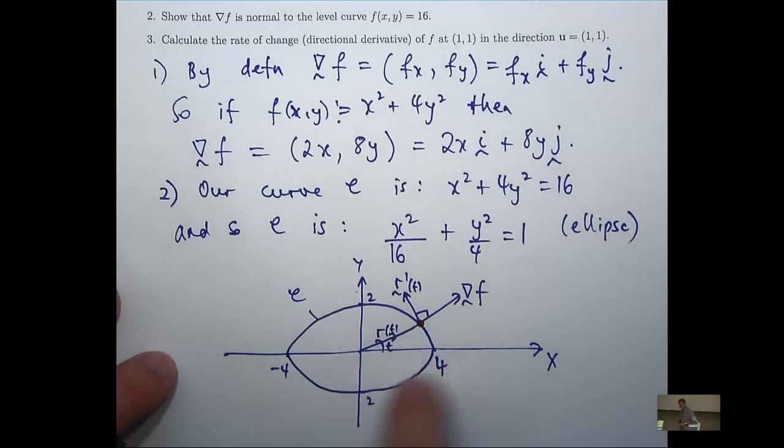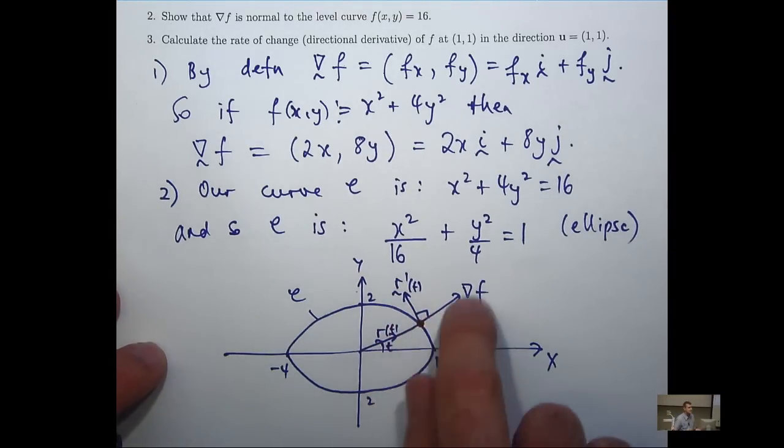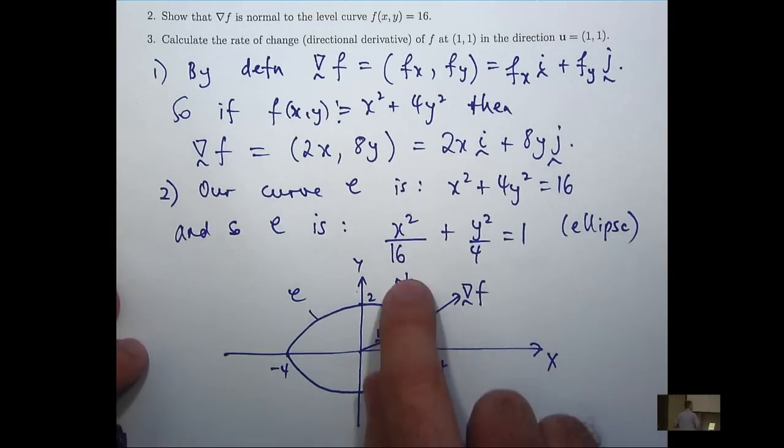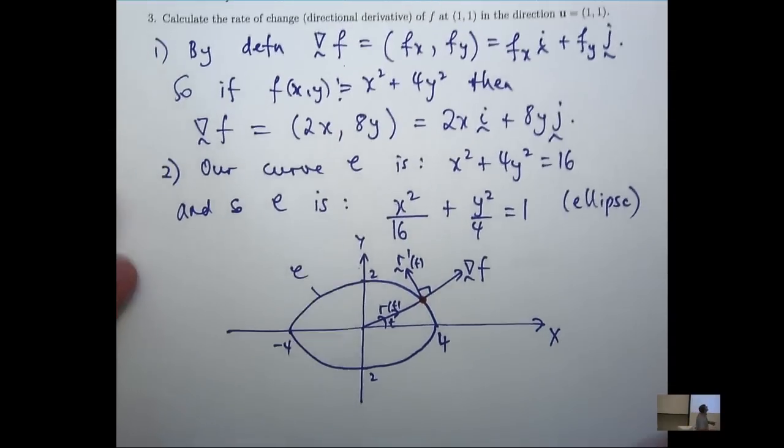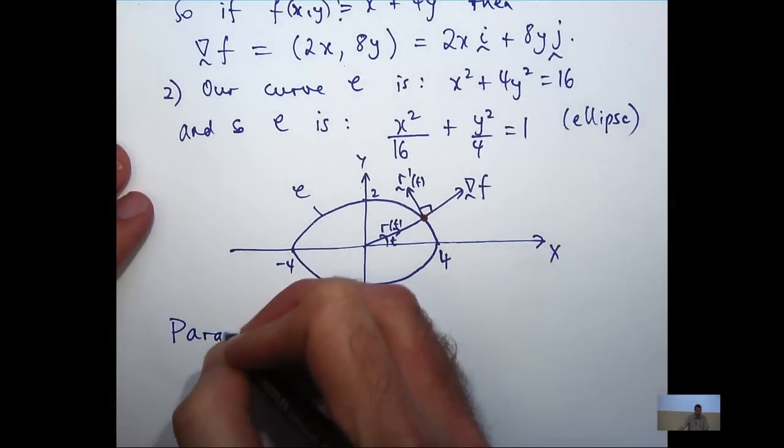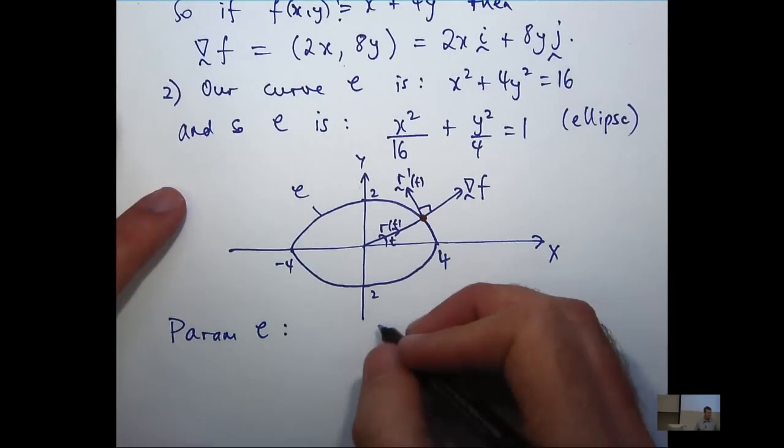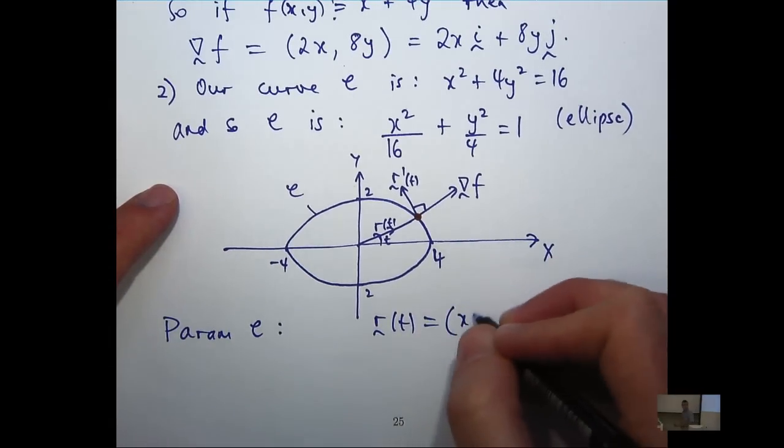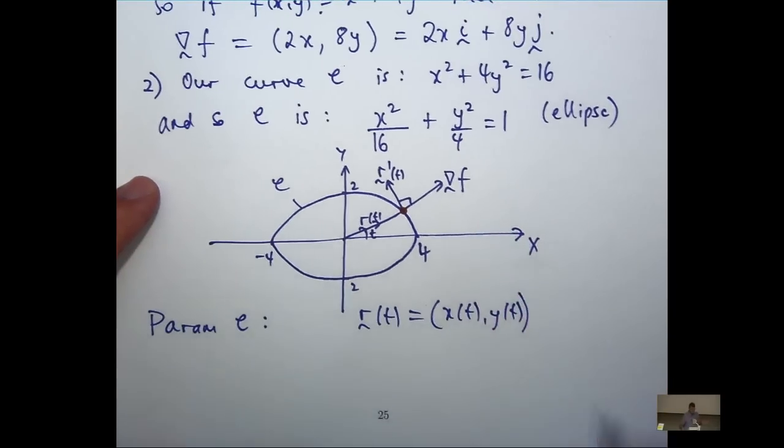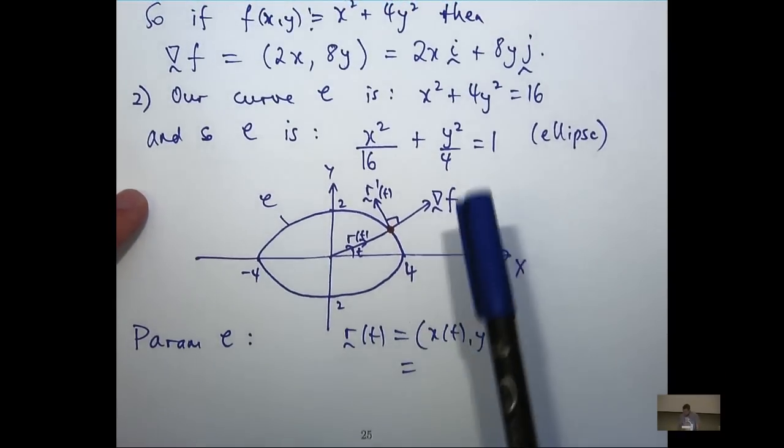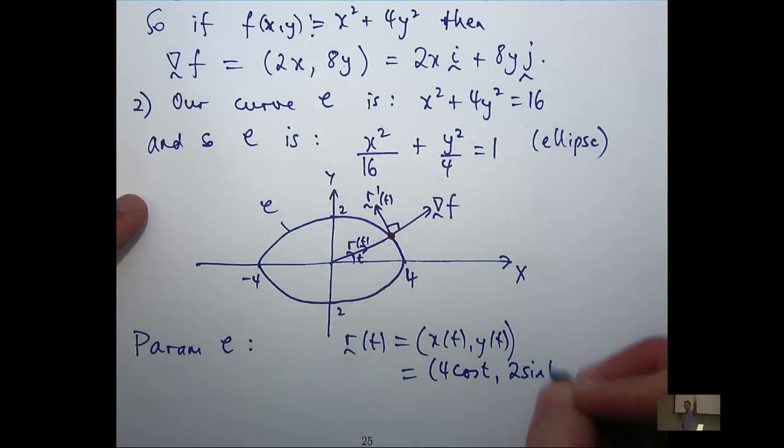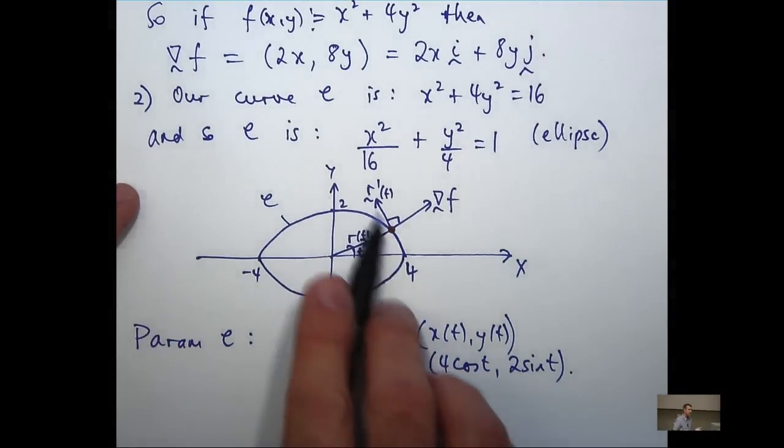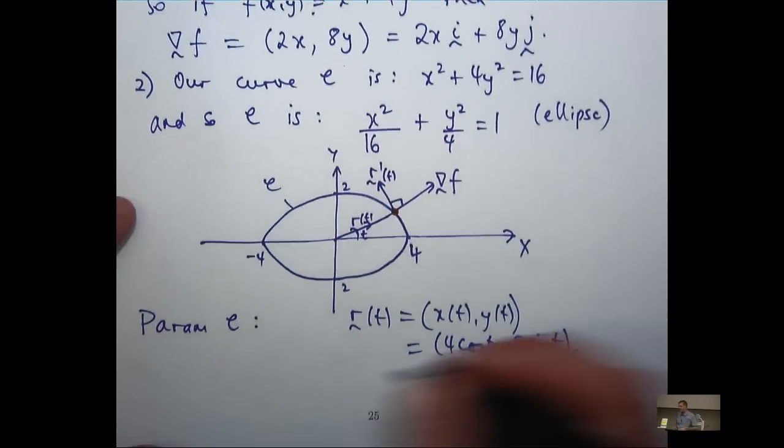What essentially the question is asking us to do is show that the angle between the tangent vector and the gradient vector is 90 degrees. So what we're going to do is parameterize our curve C using some vector function. We can then compute the tangent vector by differentiation. And then we want to show that on these points, grad f and this tangent vector are perpendicular or normal to each other. Let's parameterize C using this vector-valued function of one variable. I'm going to parameterize it, it's a bit like a circle, using 4 cosine t, 2 sine t.